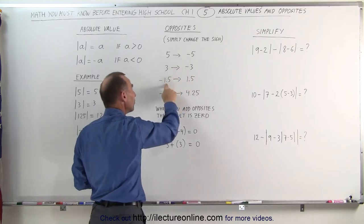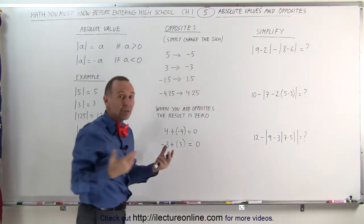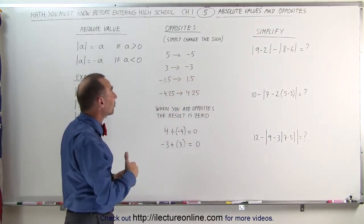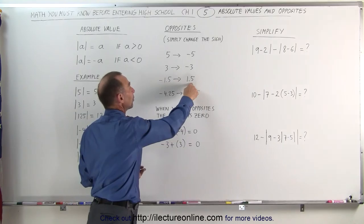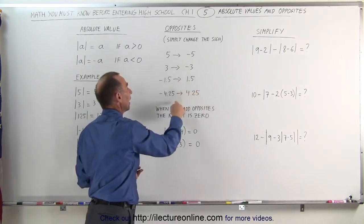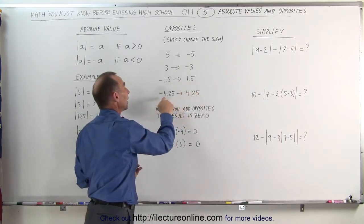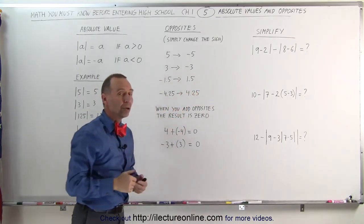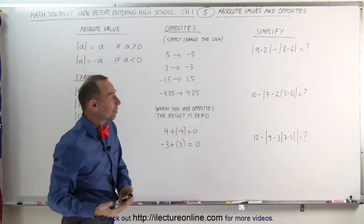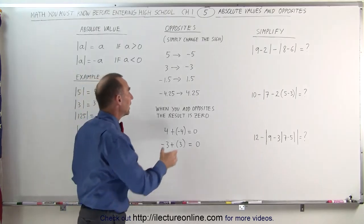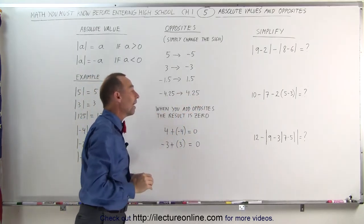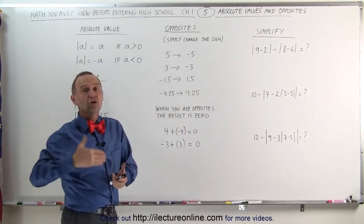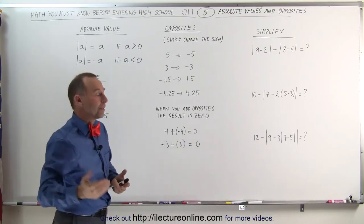And if you have a negative number like negative 1.5 and you want to find the opposite of that number, it's a positive 4.25. Opposite simply means you change the sign.